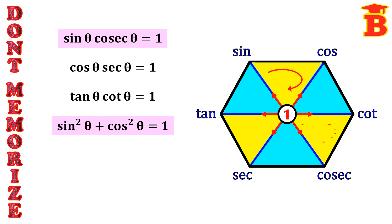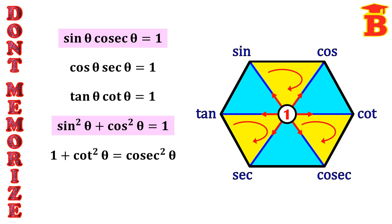Similarly, taking the next triangle in the clockwise direction, we get 1 + cot²θ = cosec²θ. Taking the next triangle and clockwise direction, we get tan²θ + 1 = sec²θ. So taking the triangles and going in the clockwise direction, we get all the trigonometric identities.